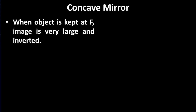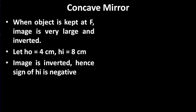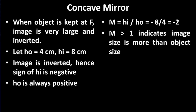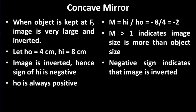When the object is kept at F, the image is very large and inverted. Let height of object be 4 centimeters and height of image be 8 centimeters. Since the image is inverted, it is formed below the principal axis and according to sign convention its sign is negative. The height of object is positive. The magnification would be minus 2. Magnification equal to 2, that is greater than 1, indicates that the image size is more than object size. The negative sign indicates that the image is inverted.